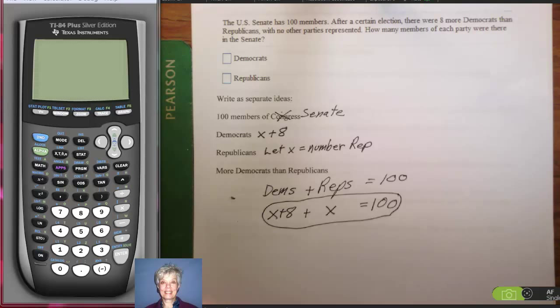And we got this just from breaking the story down into sentence by sentence. What are the main ideas? The main ideas is there are 100 members that are divided up into Republicans and Democrats. How many of each are there? So that's really all the information we have. Now, I'm going to add like terms. 1X plus 1X is 2X. So I'll have 8 plus 2X equals 100.